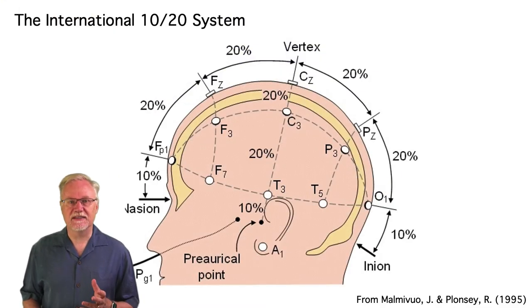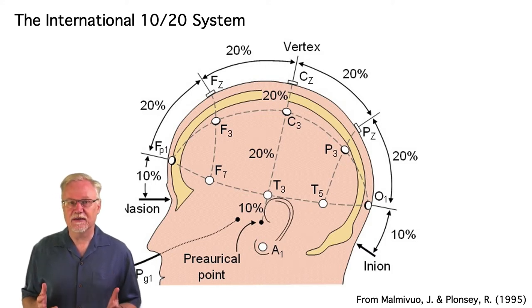First let's consider the most common system for naming electrode locations, called the International 10/20 system. It's called the 10/20 system because it involves measuring the head and placing electrodes every 10 or 20% of the distance between key landmarks.